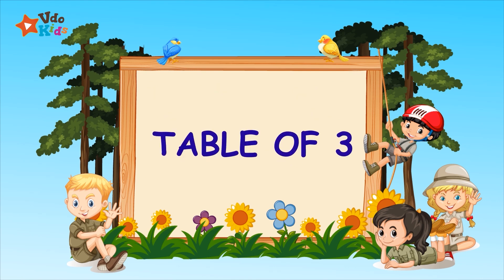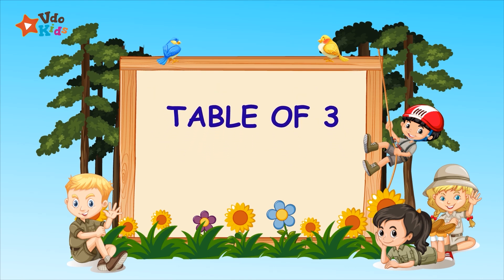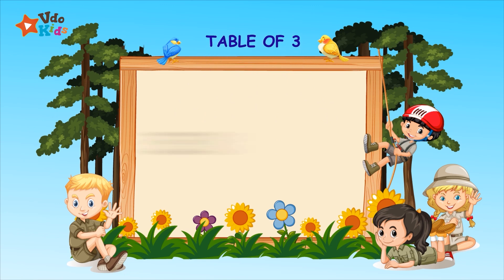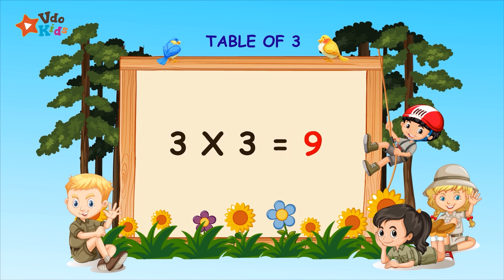Hi friends, we are learning table of threes. Three ones are three. Three twos are six. Three threes are nine.